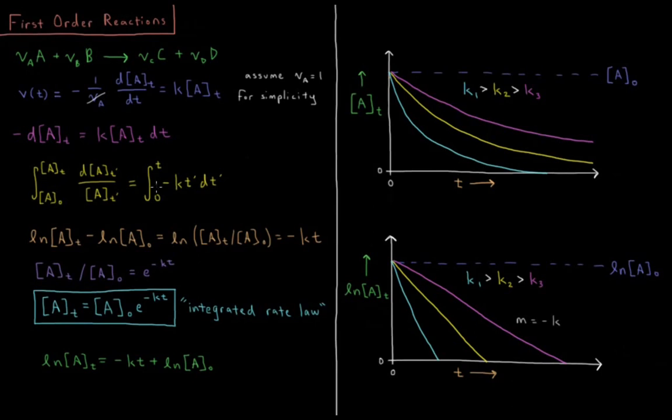we get dA over A equals minus dt, I believe. Yes, minus. There should not be a t prime there. Hold on. There we go. We have dA over A equals minus k dt.